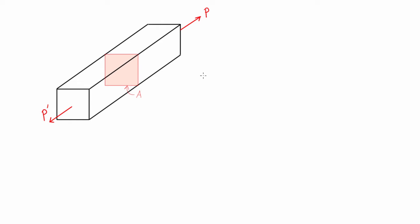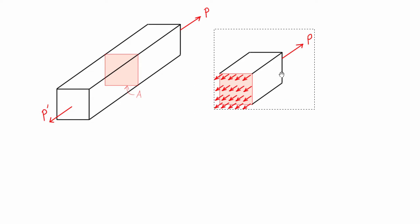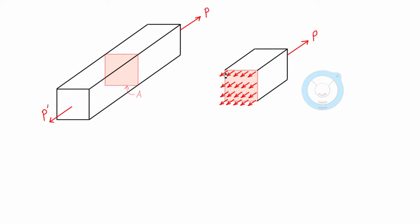When we want to draw a free body diagram for this, you can see that for this section of the beam here, we're going to have the force P pulling in one direction, and we need to cancel that out with an equal and opposite force.